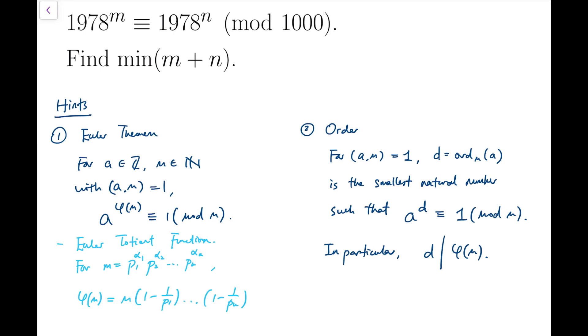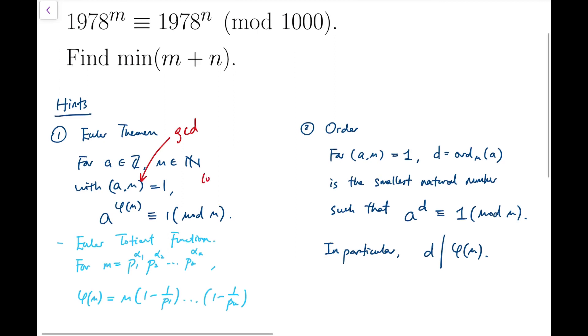Let me first introduce the tools I'm going to use for this problem. The first one is Euler's theorem. For integer a and natural number m, with a and m being coprime, this bracket refers to GCD, greatest common divisor, or some may call it HCF. This equals 1, which means coprime—they do not share any common prime factor. Then a to the power of φ(m), this power is congruent to 1 mod m, which means it will have remainder 1 when divided by m.